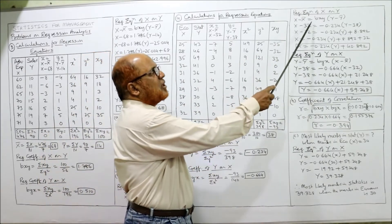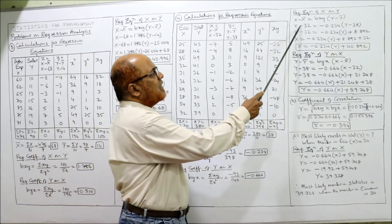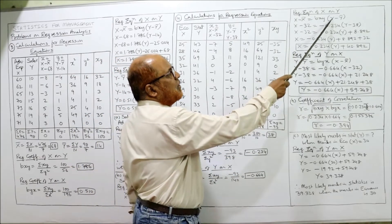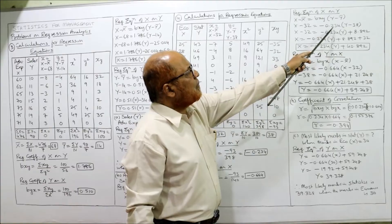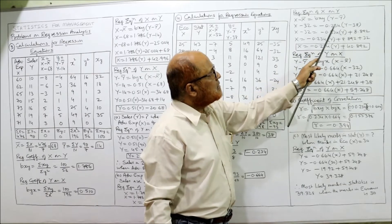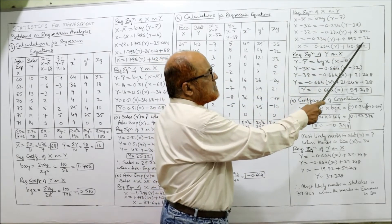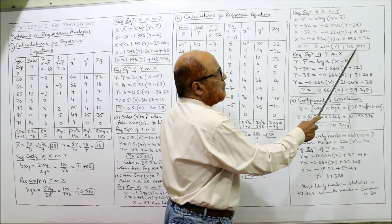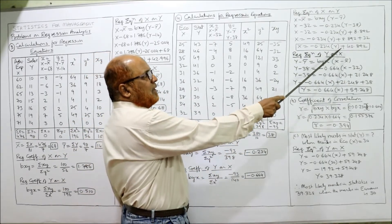Regression equation of X on Y: X minus X bar equals BXY times (Y minus Y bar). With X bar equal to 32 and BXY equal to minus 0.234: X minus 32 equals minus 0.234 times (Y minus 38). Opening the bracket: minus 0.234Y plus 0.234 times 38 equals 8.892. Bringing minus 32 to the RHS gives X equals minus 0.234Y plus 8.892 plus 32, so X equals minus 0.234Y plus 40.892.